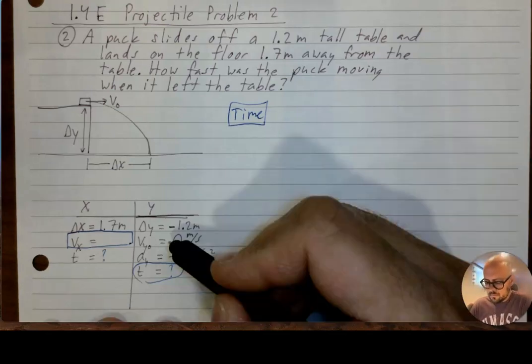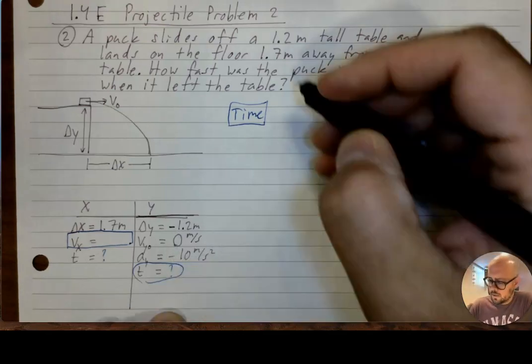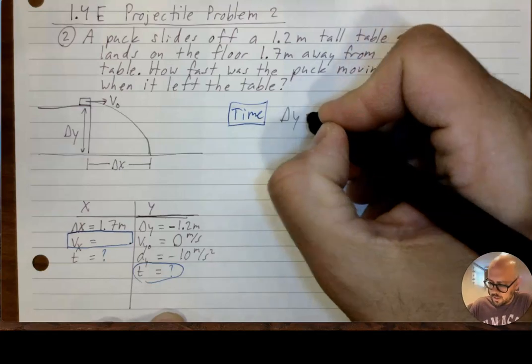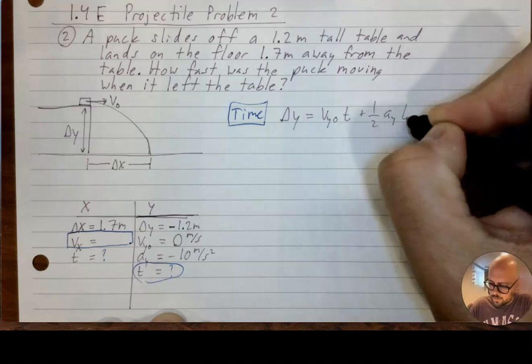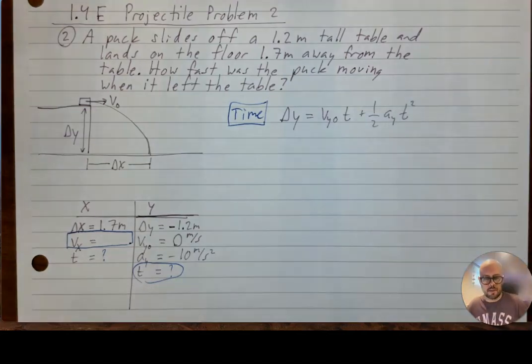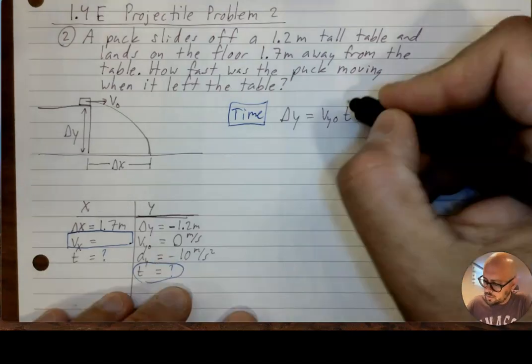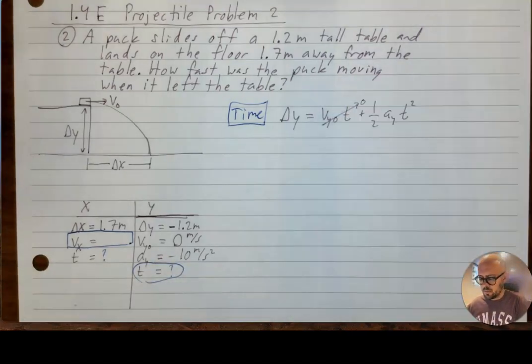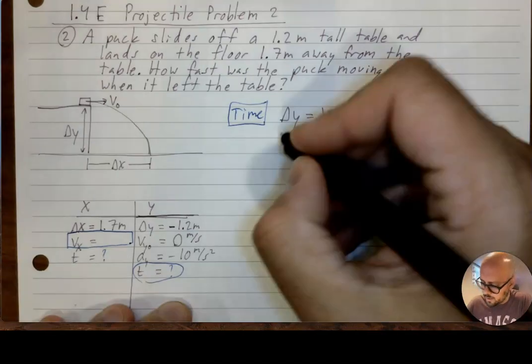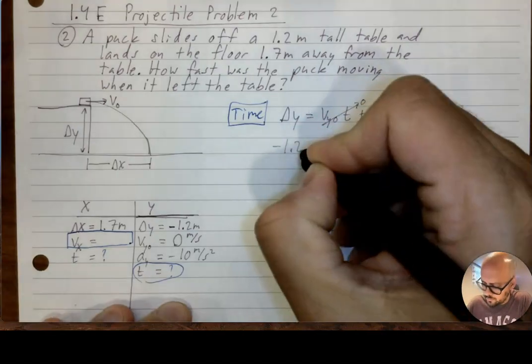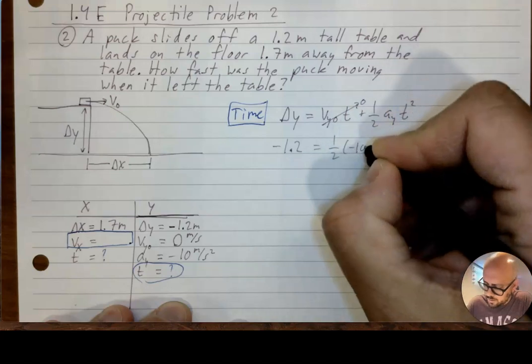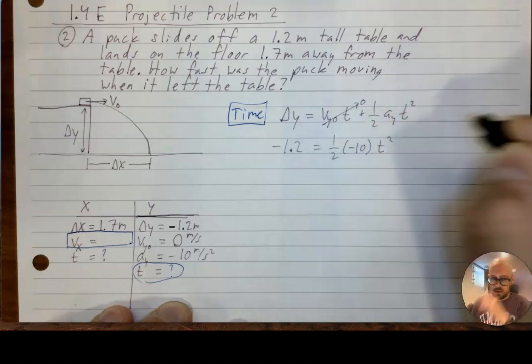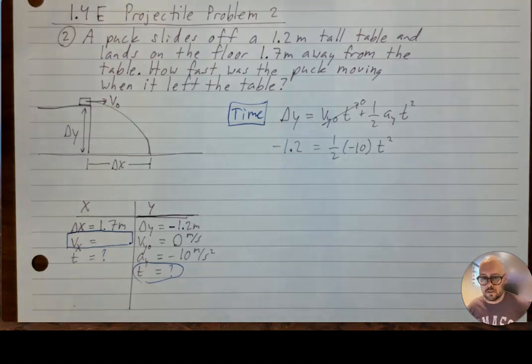So to find time, these problems so far have focused on the same equation. It's not always this one that you start with, but the problems I made up, you do. The initial vertical velocity was 0. So I can cancel that term right away. And I have delta y is negative 1.2 equals 1.2 times negative 10 times t squared.